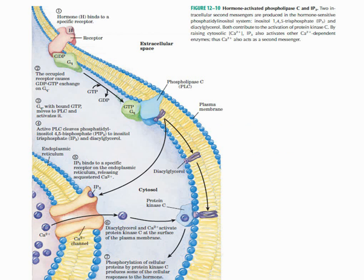begin. How is the IP3-DAG pathway operated? Let's start at the hormone level. First of all, hormones bind to their specific receptors on the plasma membrane, activating the G protein-coupled receptors.